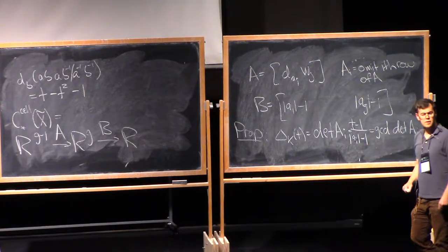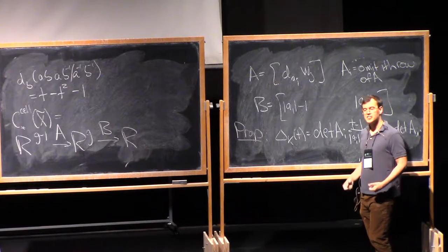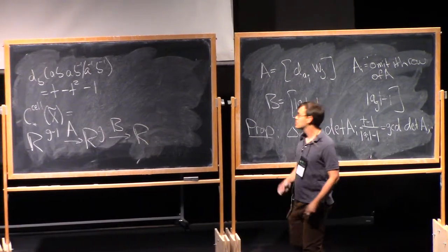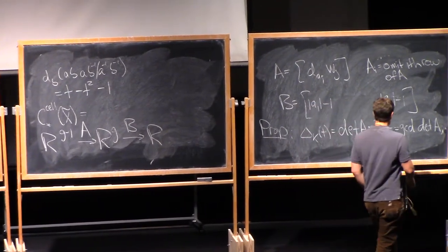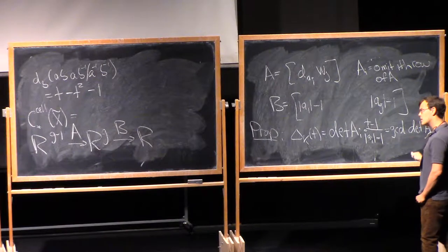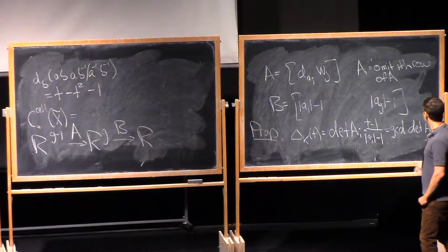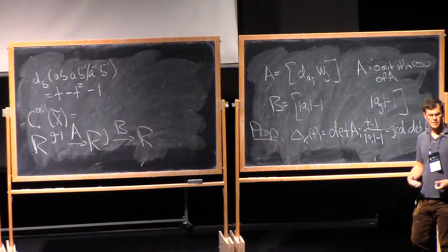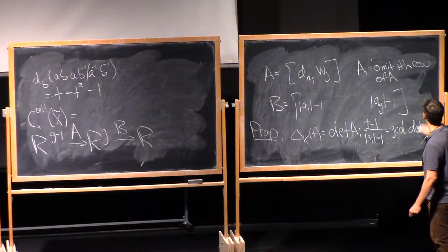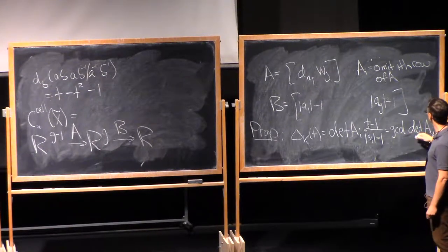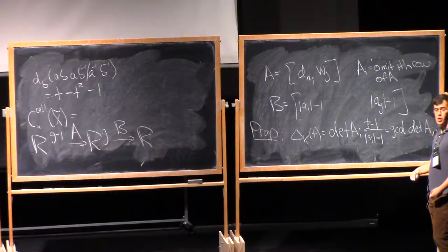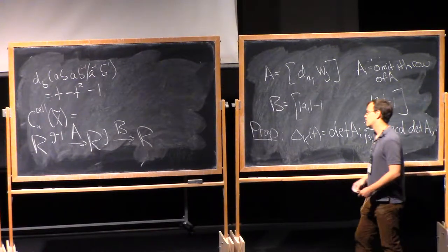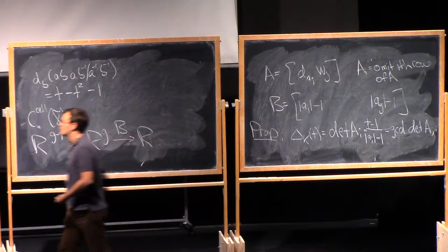So I can define the Alexander polynomial just as an invariant of a group. One way, according to this definition, that I can see the Alexander polynomial is a polynomial over the integers — not over the rational numbers — is by taking this definition. This actually lets me get an Alexander polynomial that's well-defined up to multiplication by plus or minus T^k, but we still haven't gotten rid of that ambiguity.